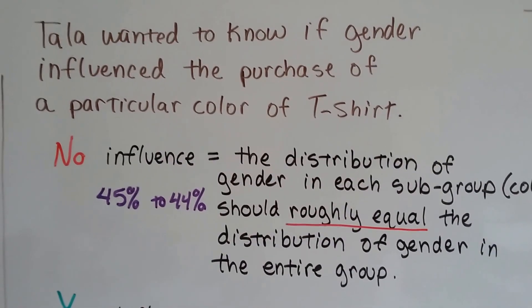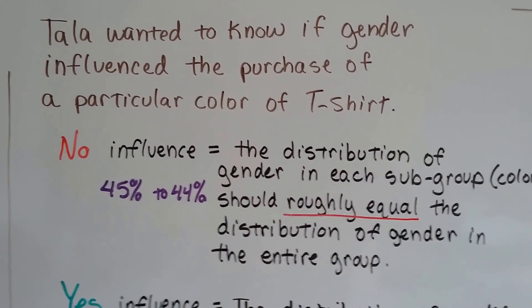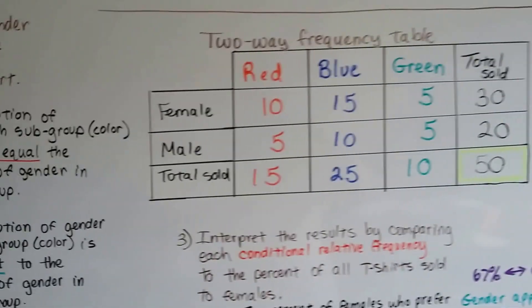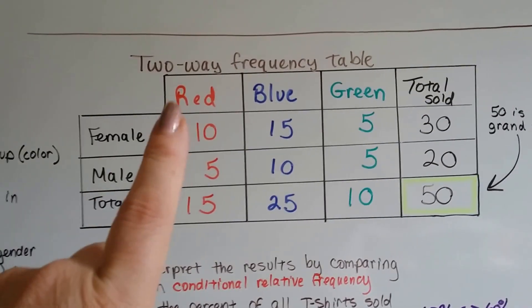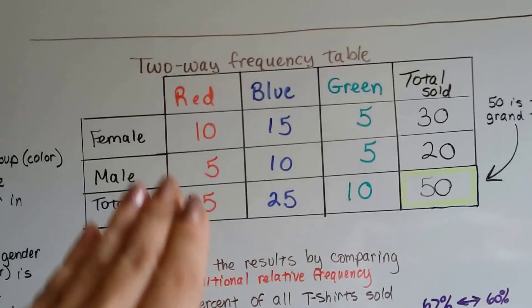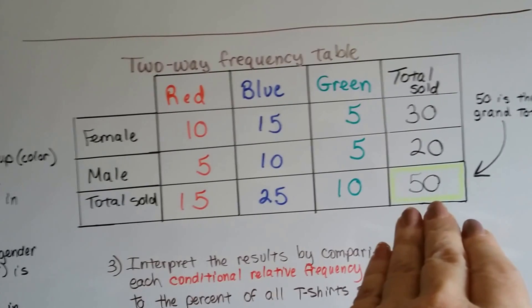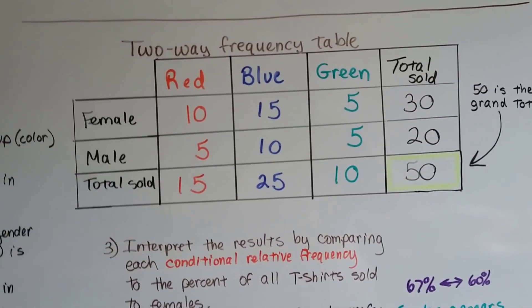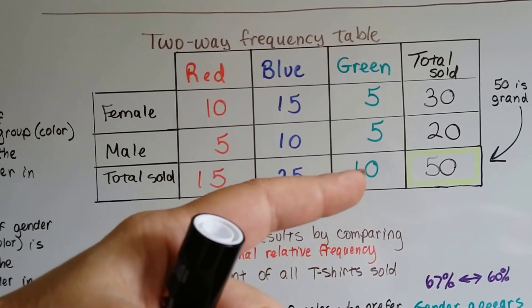So Tala wanted to know if gender influenced the purchase of a particular color of t-shirt. And she sold these t-shirts. We've been using this two-way frequency table for the last few videos. Tala sold red, blue, and green t-shirts. To females she sold 30, and to males she sold 20 total. It was a grand total of 50. This bottom right-hand corner is the grand total. The total of red sold is 15, blue is 25, and green is 10.